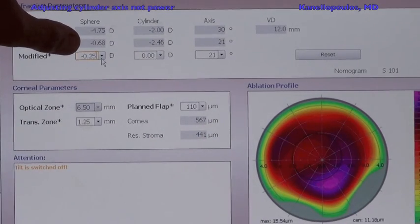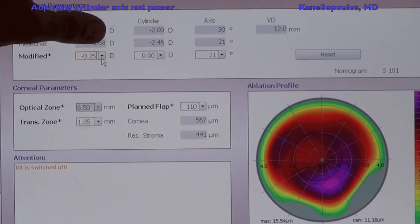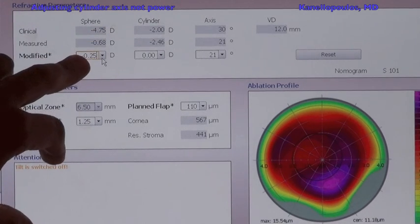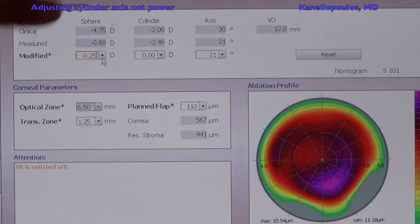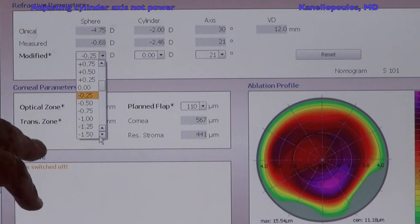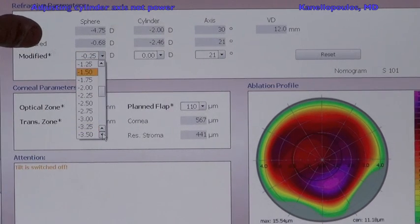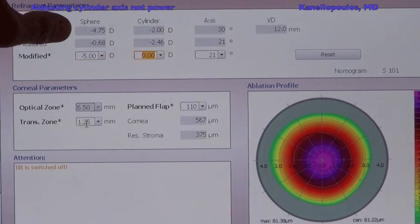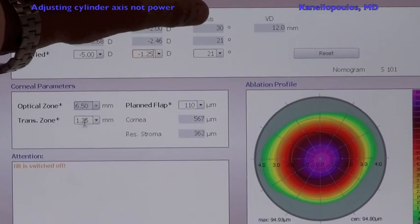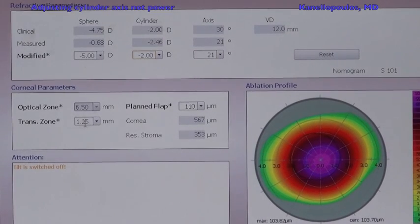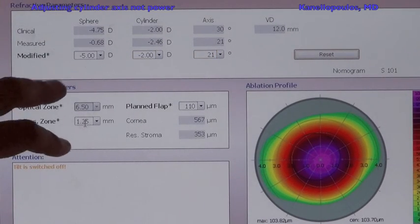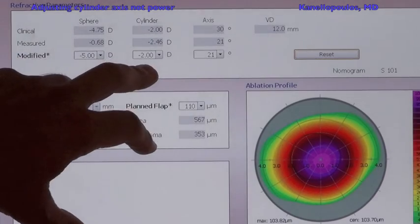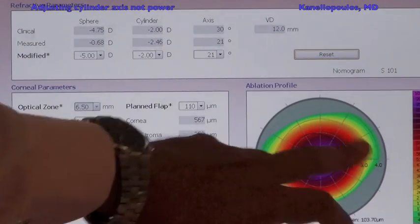We're going to add this for refraction. So our refraction will be instead of minus 4.75, it will be minus 5, and our cylinder will be minus 2, the refractive cylinder, but not at 30 degrees—it will be at 21 degrees. So this is our final correction: minus 5 minus 2 at 21 degrees for angle kappa.